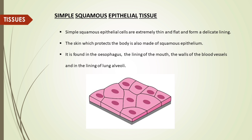The first type of epithelium tissue is simple squamous epithelial tissue. Simple squamous epithelial cells are extremely thin and flat and form a delicate lining. The skin, which protects the body, is also made of squamous epithelium. It is found in the esophagus, the lining of the mouth, the walls of the blood vessels and in the lining of lung alveoli.